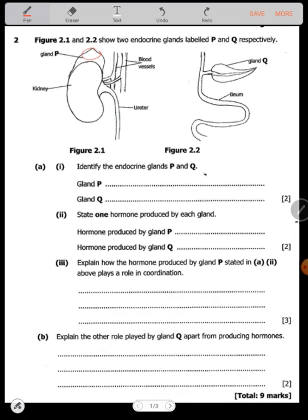So we have P and we have Q here. Figure 2.1 and Figure 2.2 - identify the endocrine glands P and Q. The endocrine gland found on top of the kidney is known as the adrenal gland. Q is known as the pancreas.